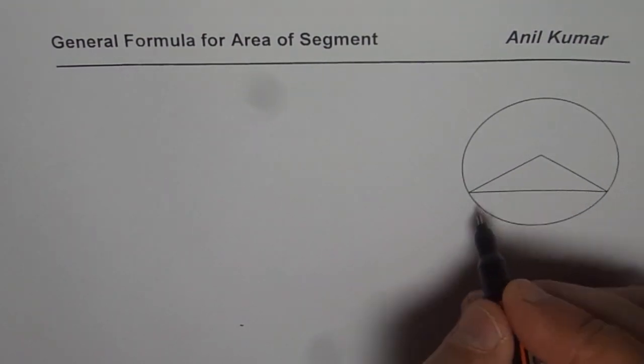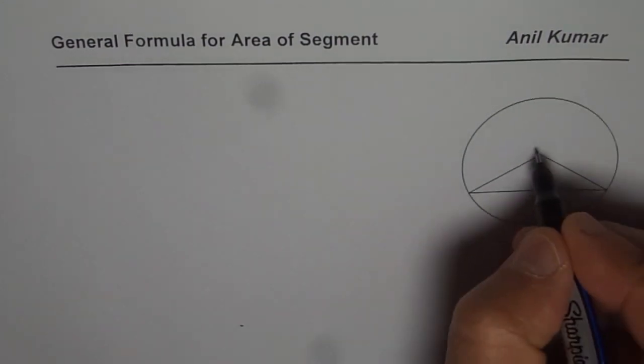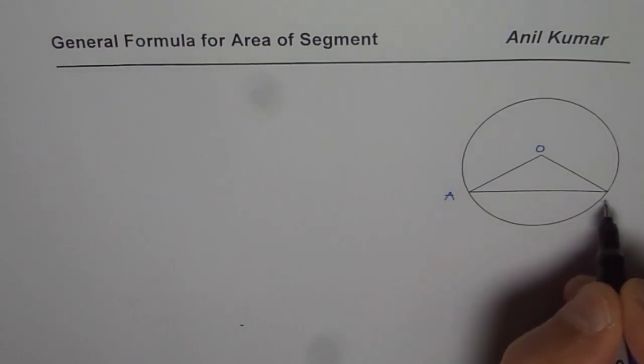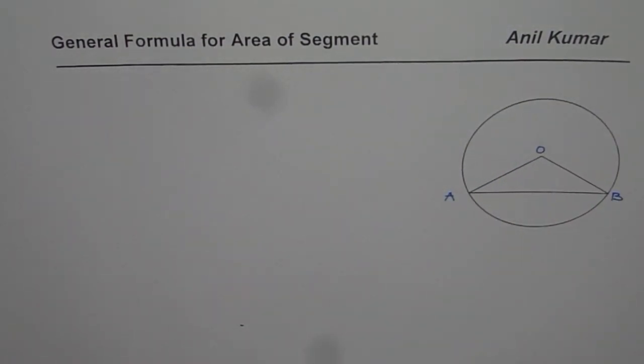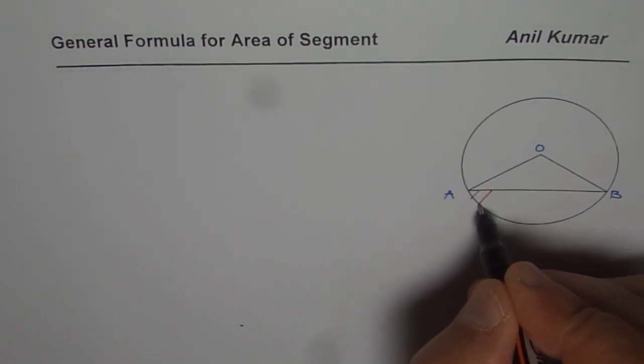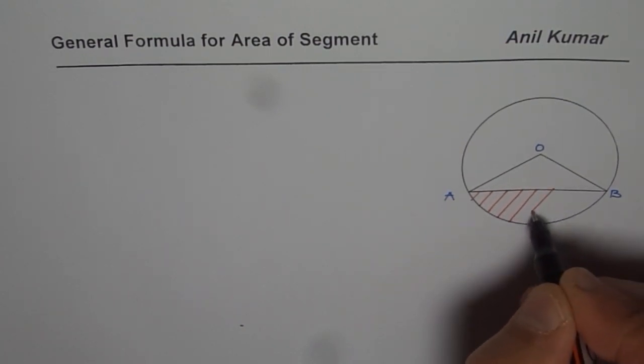When we say area of segment, this is a circle given to us, let me label it. Where center is O and we have this chord AB. Then area of the segment is the area enclosed between the chord and the circle. So that area we are interested in finding.